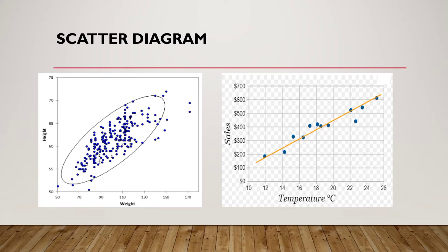Here is an example of a scatter diagram. On the left figure, the horizontal axis is weight and the vertical axis is height. The blue dots or points here are the plots for the data about the relationship of weight and height. On the second figure we have temperature as the horizontal axis and sales for the vertical axis.